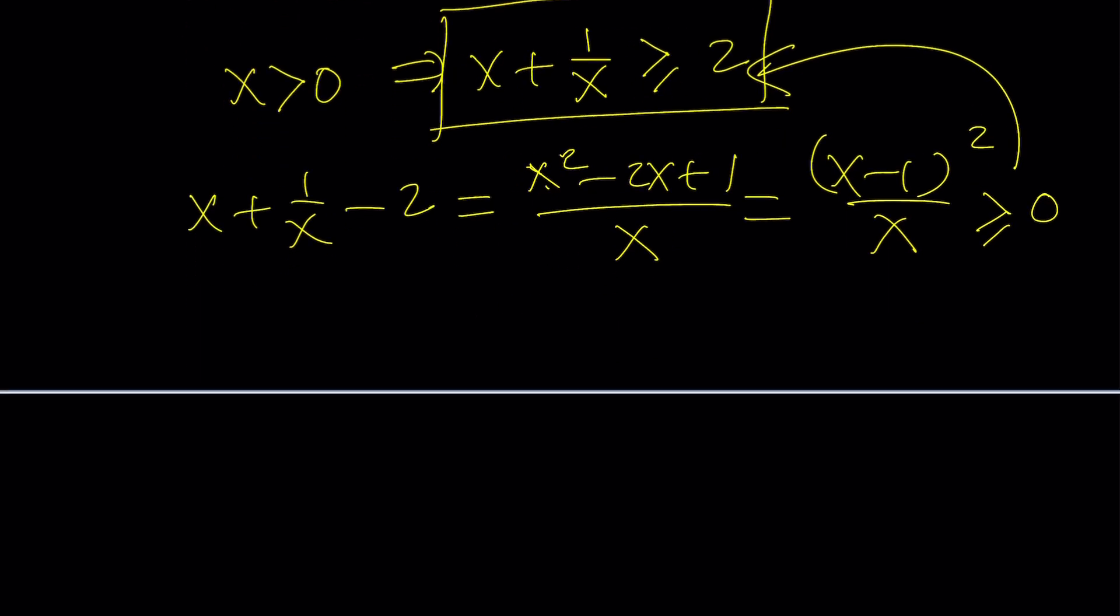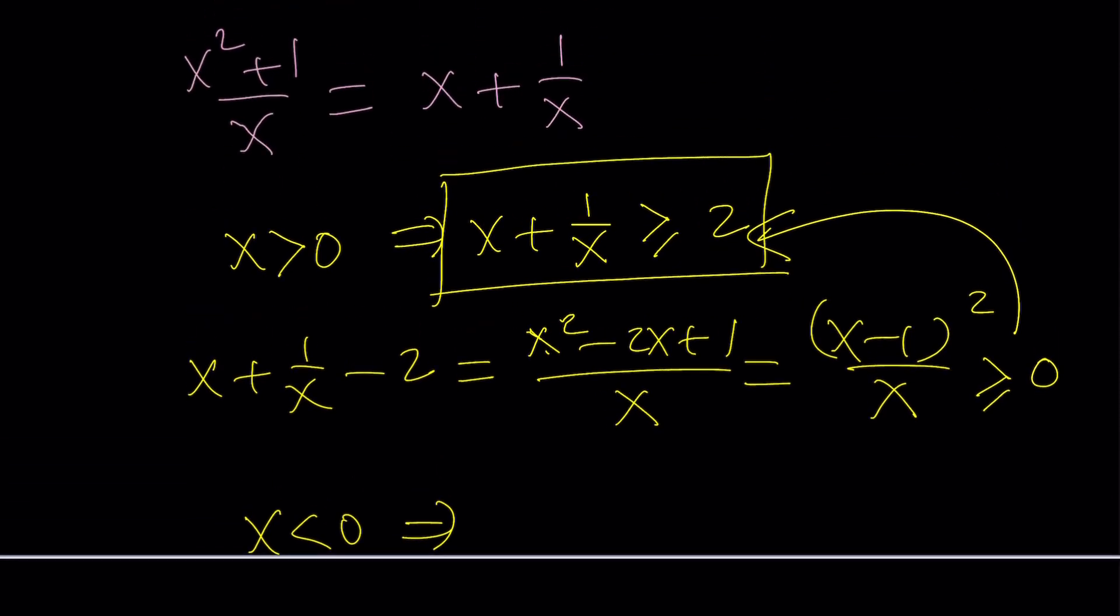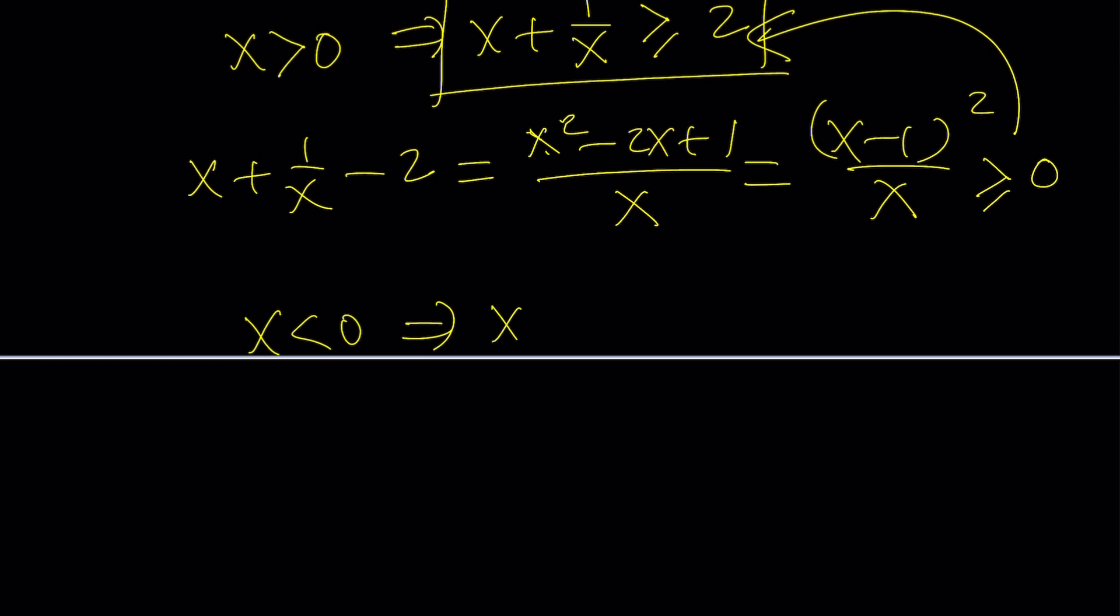Nice. But we're going to make it nicer. What happens if x is negative? Then the opposite happens. Think about it. If x is one, one plus one is two. So that's the borderline. If x is negative one, negative one plus negative one is negative two. So if you use something like negative five, you're going to get a smaller negative value, not a larger one. So in other words, if x is negative, this is going to be on the opposite side, less than or equal to -2.